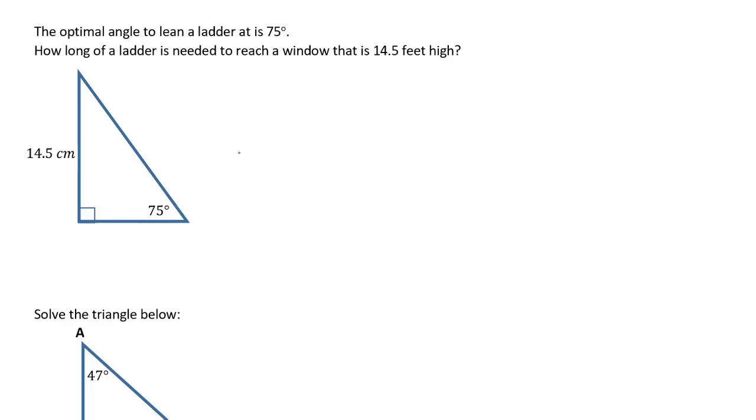In this question, we're told that we have a ladder that is leaning against a wall at an angle of 75 degrees. We know that it is reaching a window that is 14.5 feet (the units are wrong, we'll correct that) above the ground. And it's asking us, how long must this ladder be to reach the window?